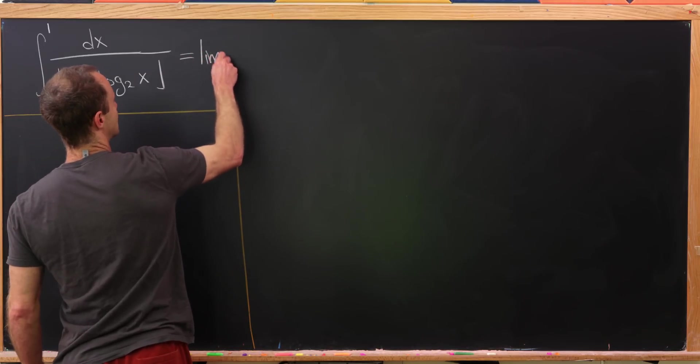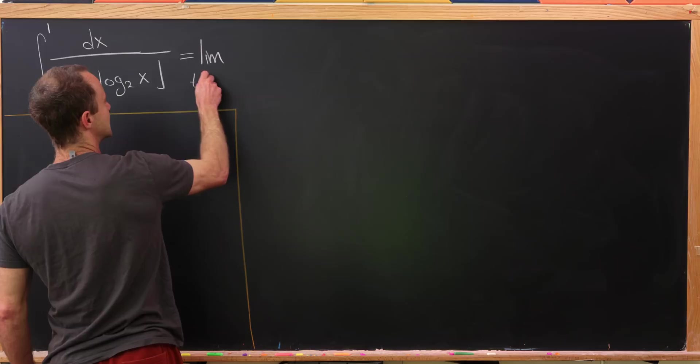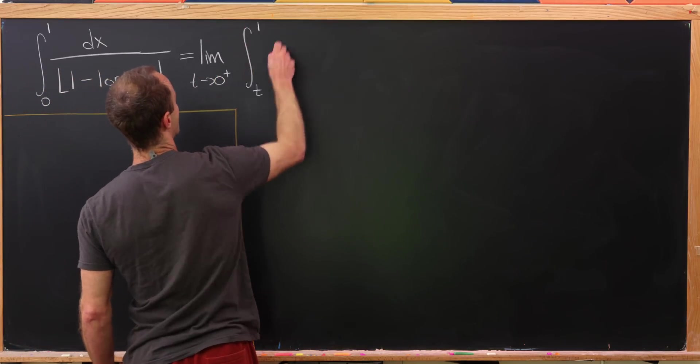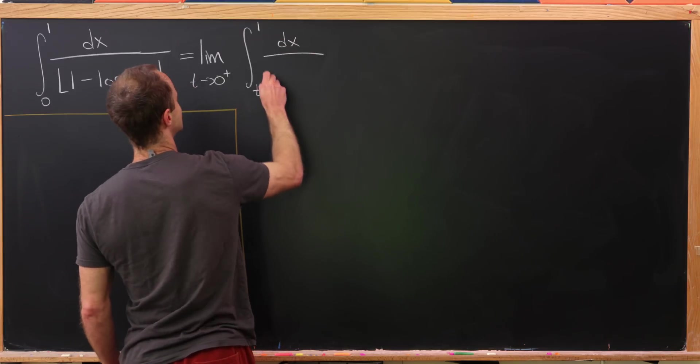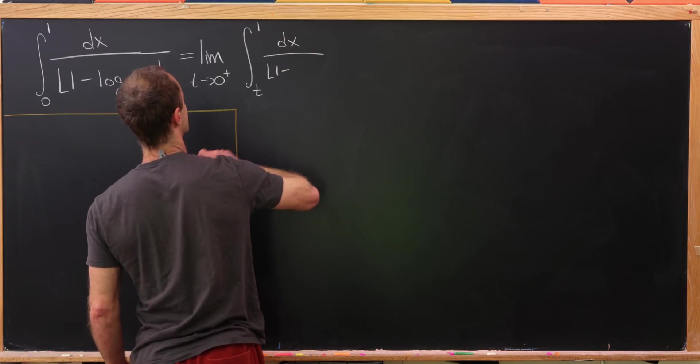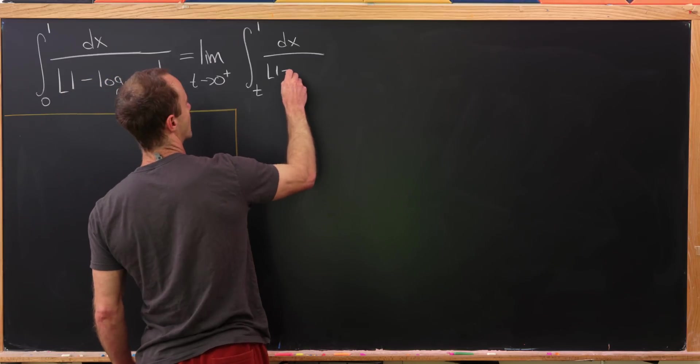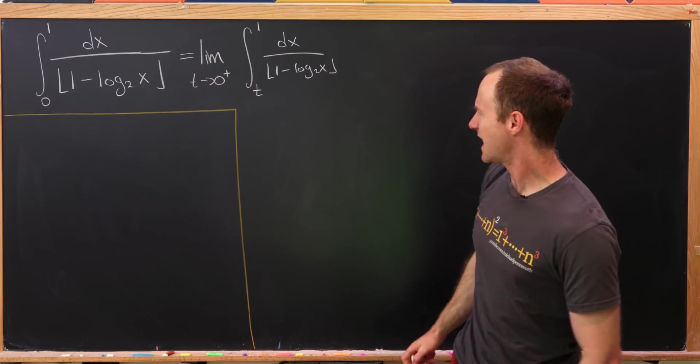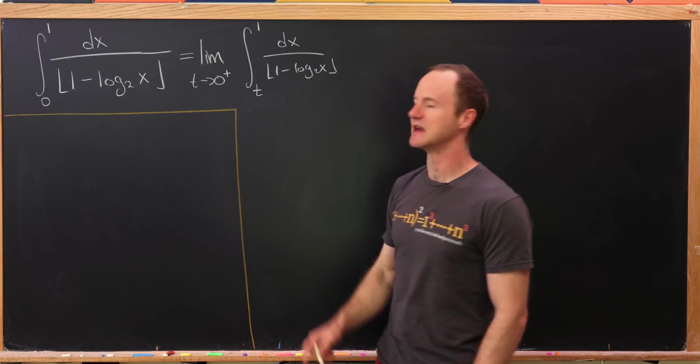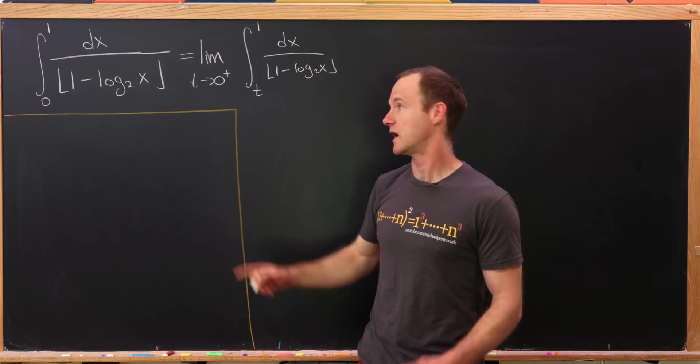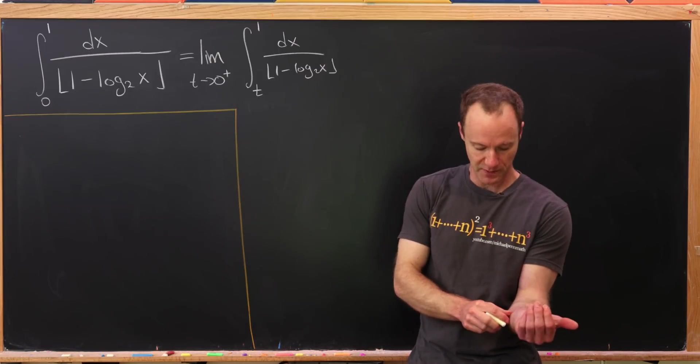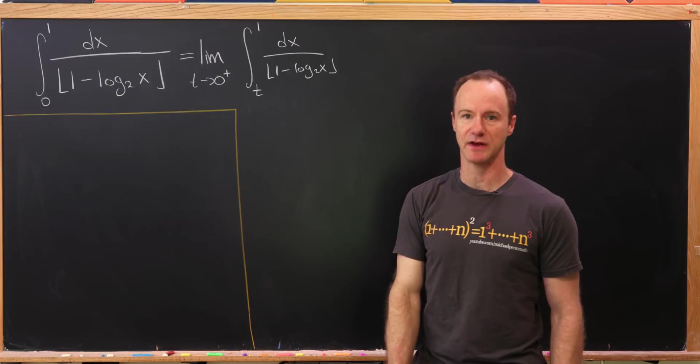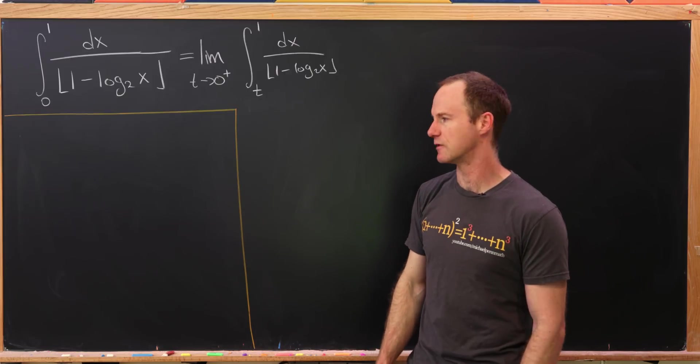So I'll write this as the limit as we'll call it t goes to 0 from above of the integral from t to 1 of the same integrand. So it's essentially 1 over the floor of 1 minus the log base 2 of x. But now we can really put anything in here for this t that we want as long as it approaches 0 from above. So we might as well put something in here that interacts with the log base 2 well, just like we talked about before.